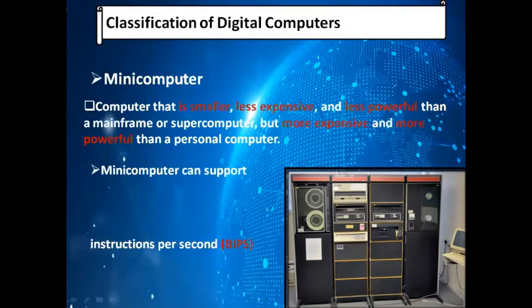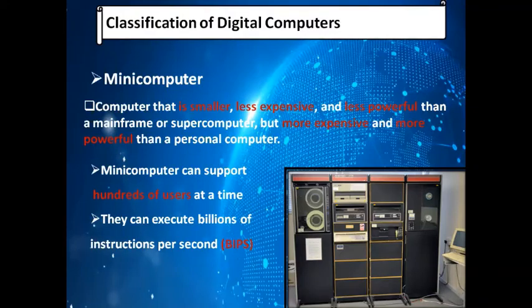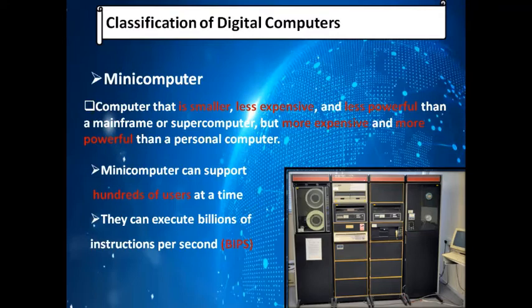The next classification is the minicomputer — a computer that is smaller, less expensive, and less powerful than a mainframe or supercomputer, but more expensive and more powerful than a personal computer. Mainframe and supercomputers are more powerful and can execute instructions for thousands of users, but minicomputers are more expensive and more powerful than a personal computer. Minicomputers can support hundreds of users at a time and execute billions of instructions per second.